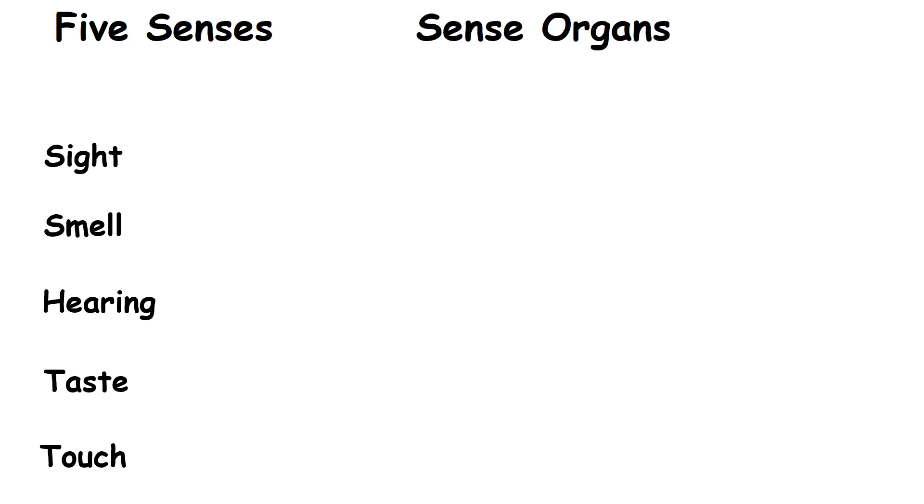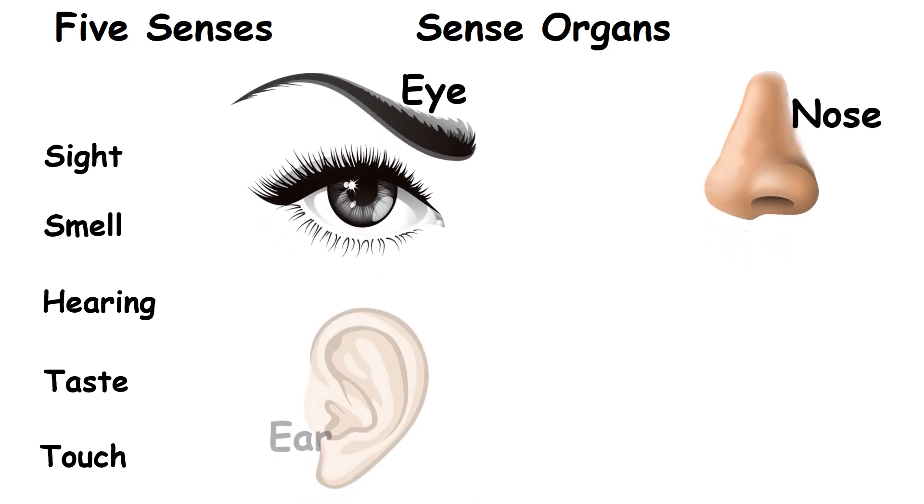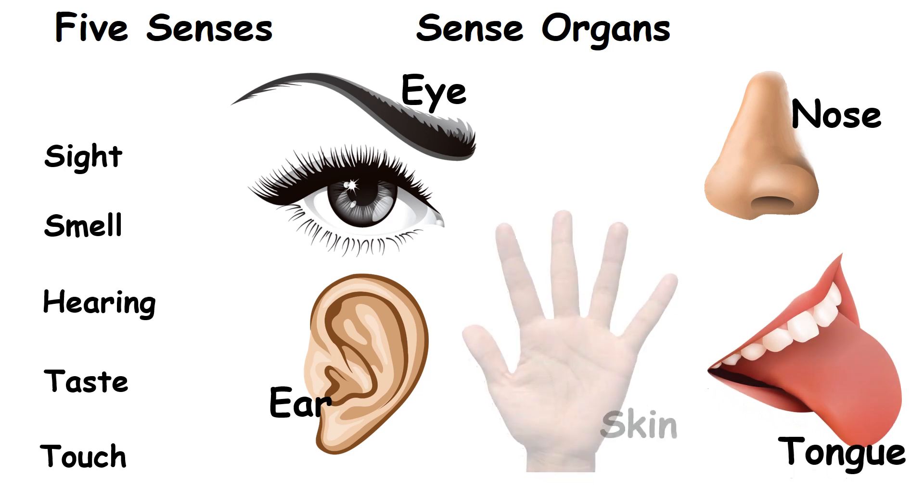Our body has five senses. They are sight, smell, hearing, taste and touch. Sense organs are used to have these senses. They are eyes, nose, ears, tongue and skin.